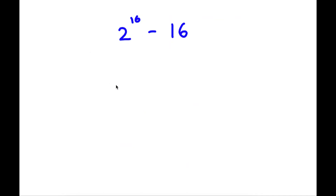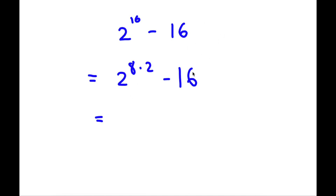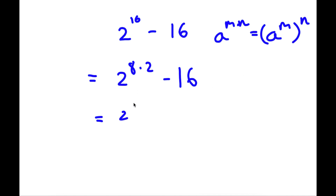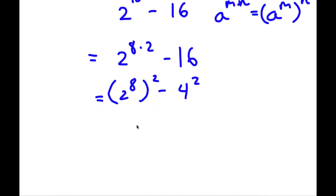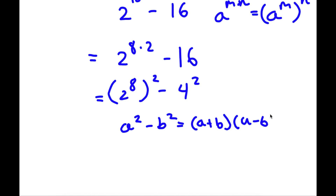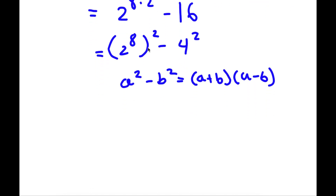So I have 2 to the power of 16 minus 16 squared. Now 16 is the same thing as 8 times 2, so now I have 2 to the power of 8 times 2 minus 16. Using the rule that a to the power of m times n equals a to the power of m, all raised to the power of n, 2 to the power of 8 times 2 equals 2 to the power of 8, all squared. And 16 I can rewrite as 4 squared. Now if I have something in the form a squared minus b squared, this is equal to a plus b times a minus b. So 2 to the power of 8 all squared minus 4 squared: here a equals 2 to the power of 8 and b equals 4.